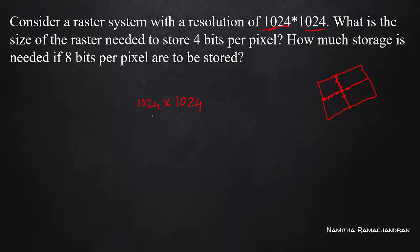Now, what is the size of the raster needed to store 4 bits per pixel? The raster is stored in the frame buffer. We are going to calculate the frame buffer size. The frame buffer is also known as the refresh buffer — it is the storage space where pixel information is kept.